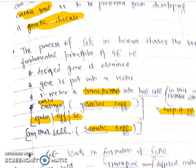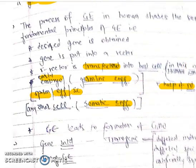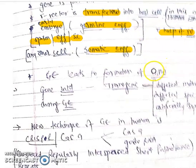This genetic engineering leads to the formation of GMO - genetically modified organism - or transgenic. The transgene that is introduced during genetic engineering can be obtained from a different individual, from across species, or can be even artificially synthesized in the laboratory.